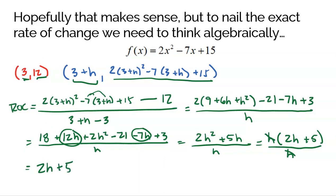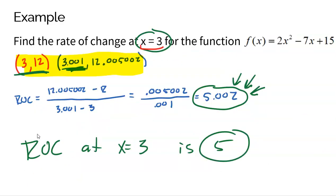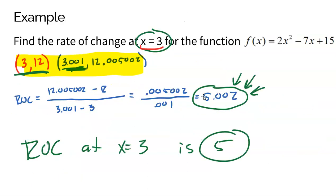What I just did was think generically: here's the point I'm trying to find the rate of change of, here's another point super duper close — h close. After all that algebra, the average rate of change between the two points is 2h + 5, where h is the distance between the two points. Going back to the previous problem, my two points were 0.001 apart — h = 0.001. Plugging in: 2(0.001) = 0.002 plus 5 gives 5.002 — exactly what I got before. That makes a whole lot of sense.